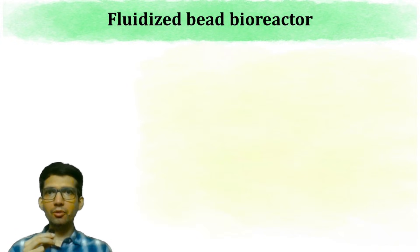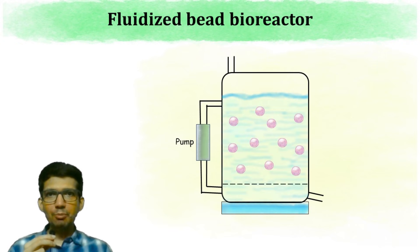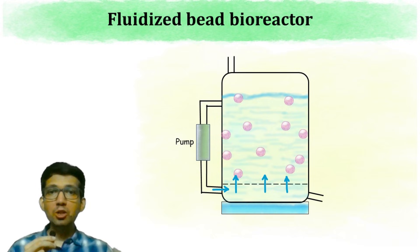Fluidized Bead Reactor. In this type of bioreactor, the beads having cells or enzyme remains suspended in the liquid. The liquid in the bioreactor is allowed to flow upwards in order to ensure continuous mixing of beads inside the reactor.